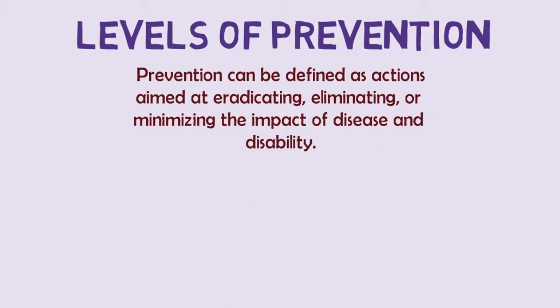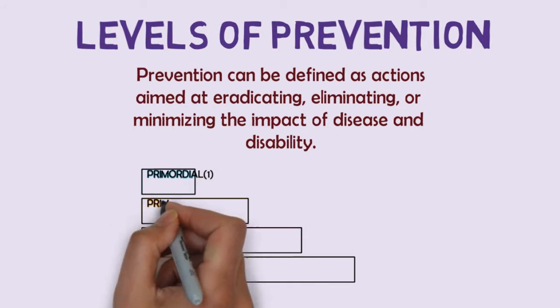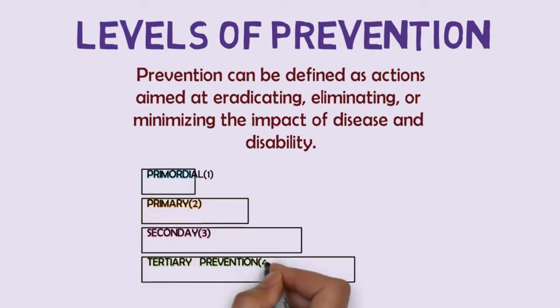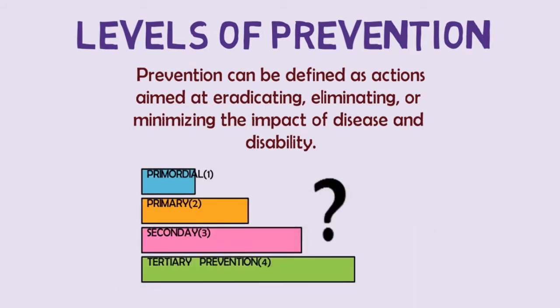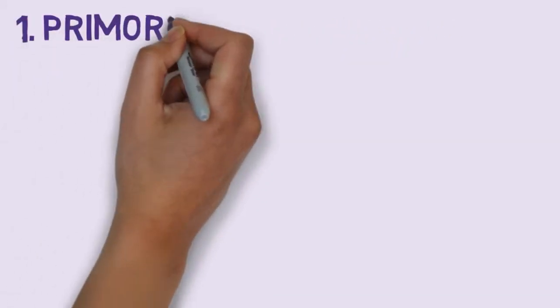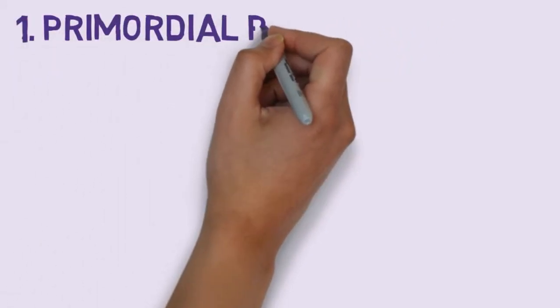The concept of prevention is best defined in the context of levels, traditionally called primordial, primary, secondary and tertiary prevention. What do these terms mean? Join me as we explore these four levels of prevention in this video.